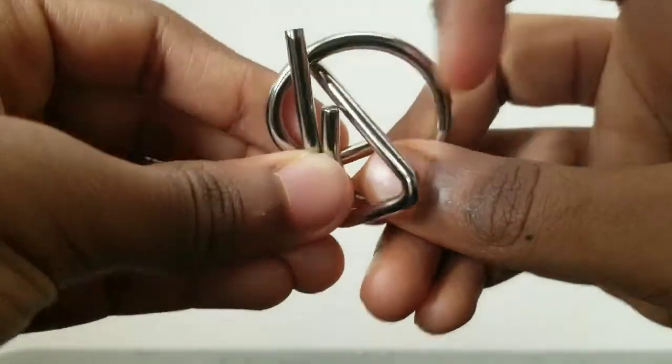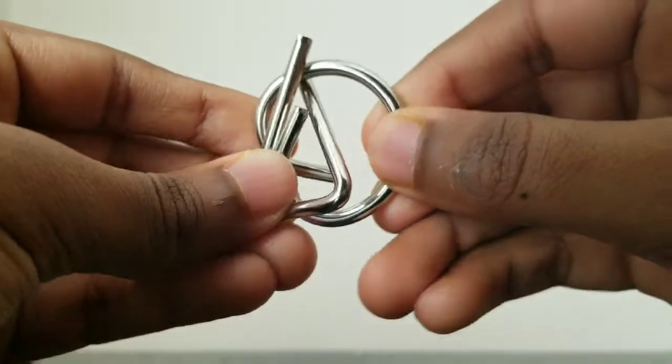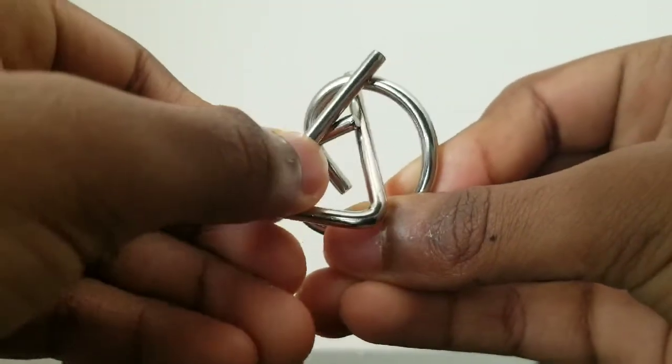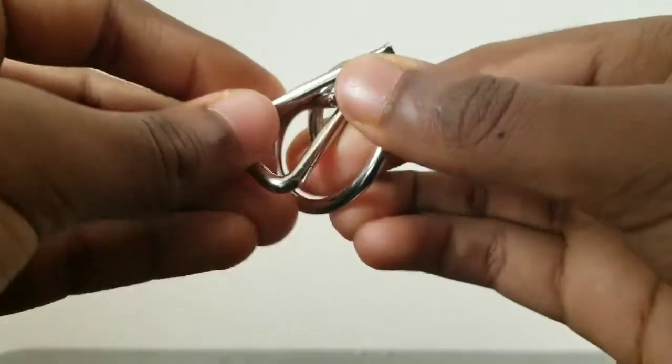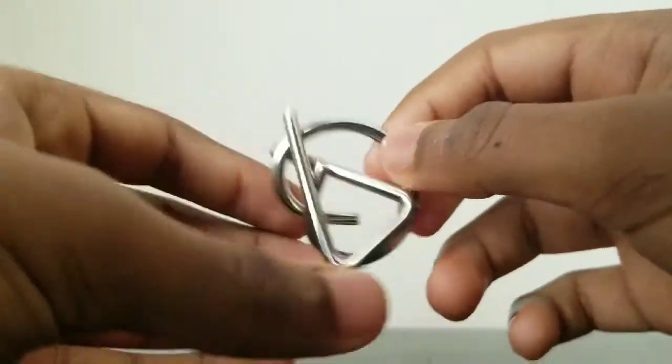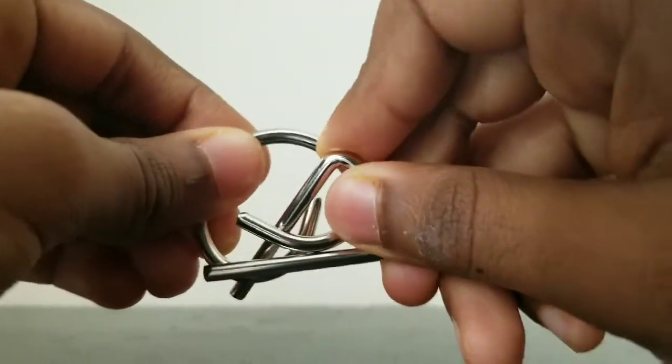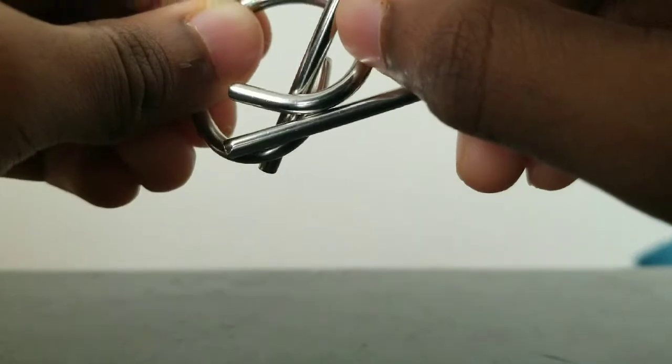See now that pipe is through the triangle right here. Then we keep following that little pretzel path, keep following, keep following. It might get stuck there like it is for me now, but just keep following.